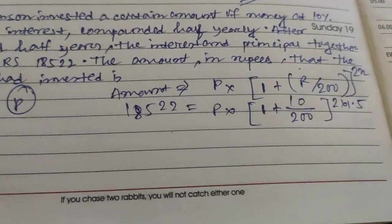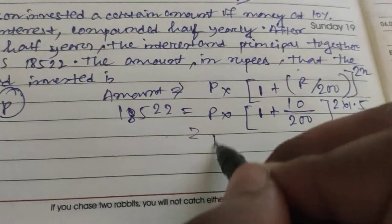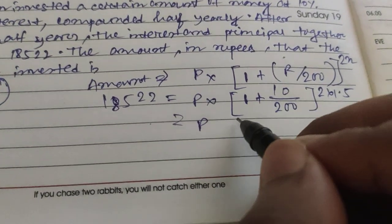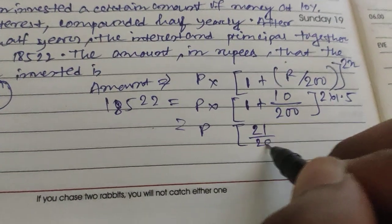So this will be 1 by 20, giving us 21 by 20 to the power 3.